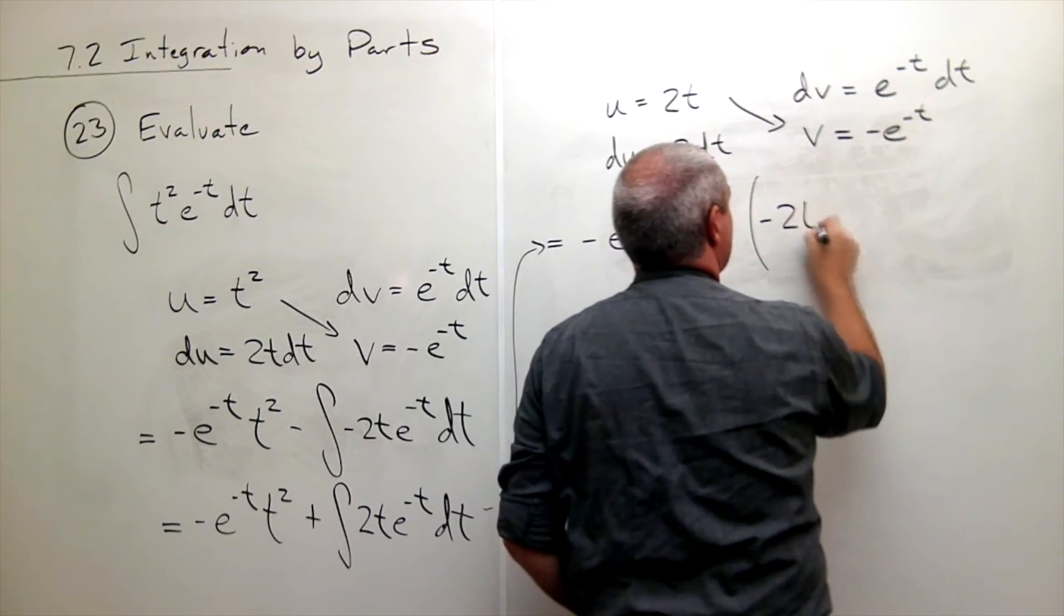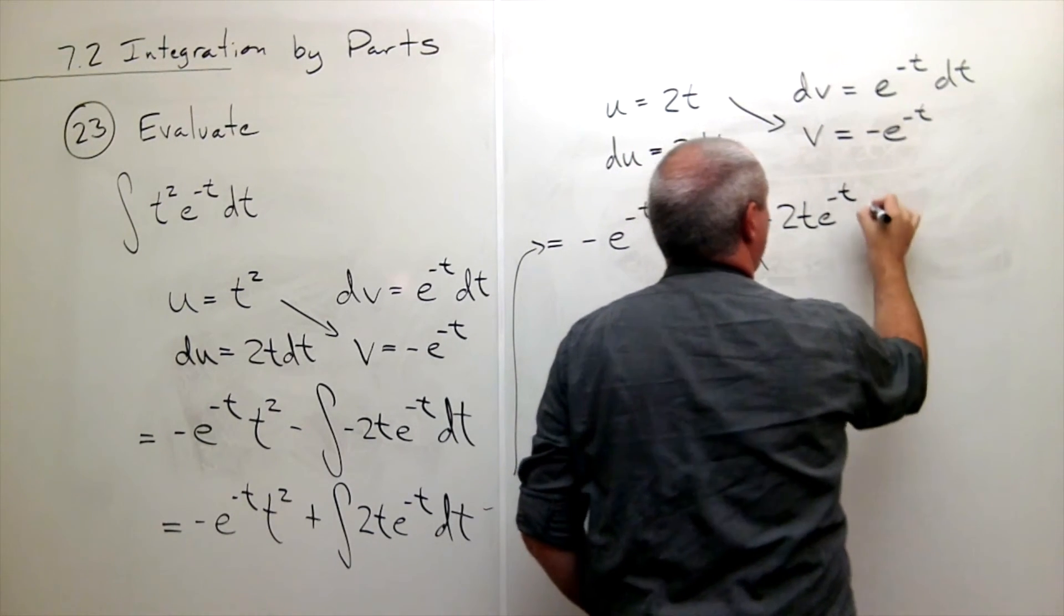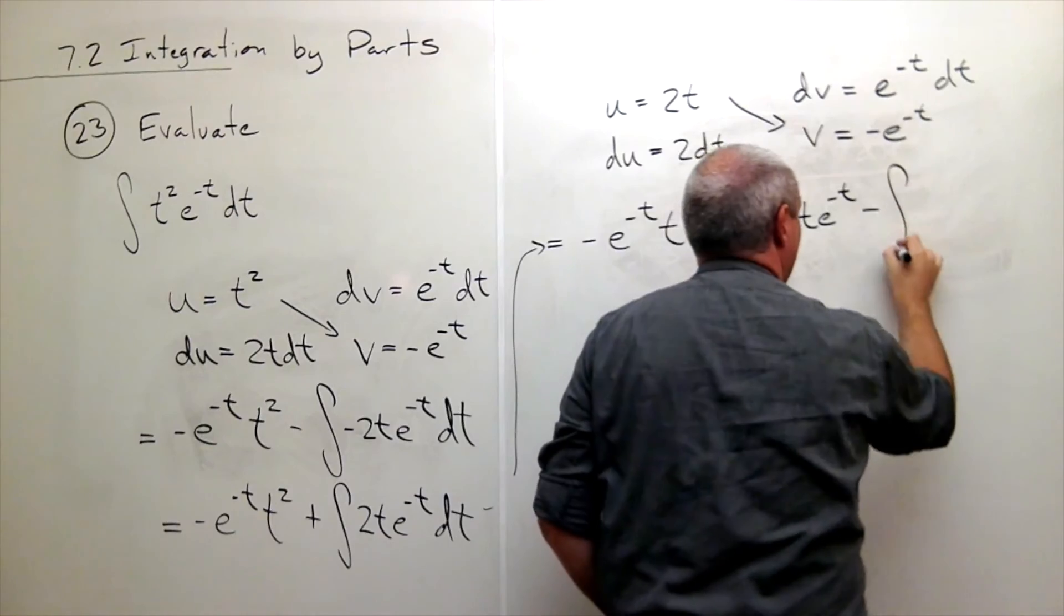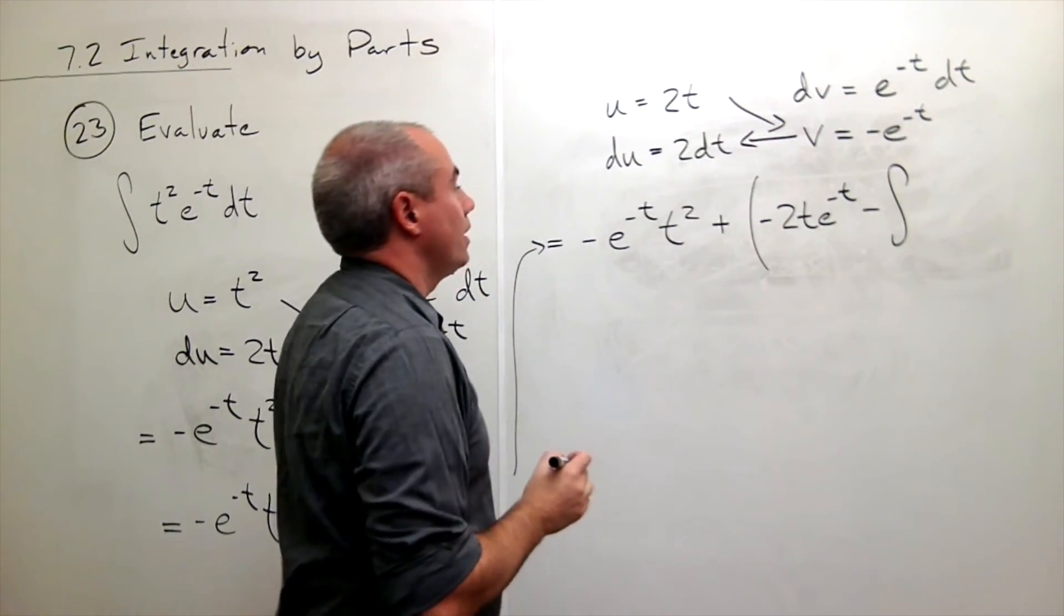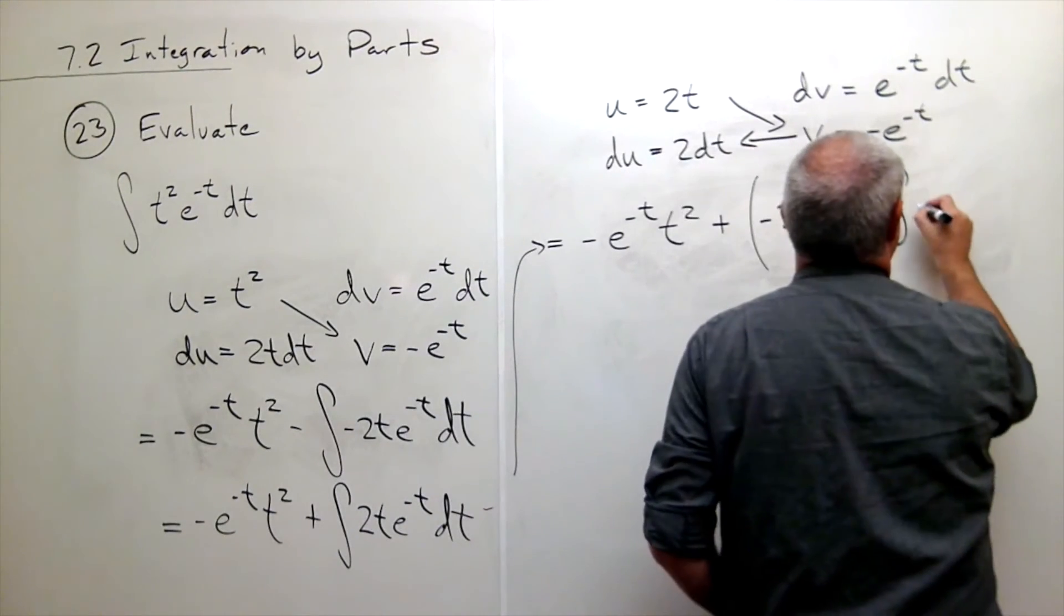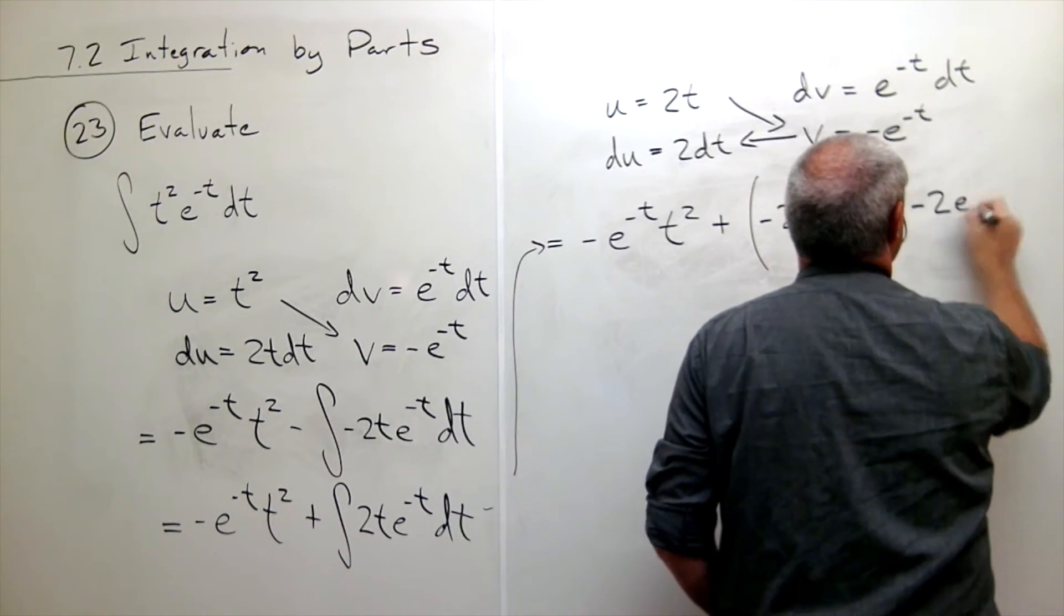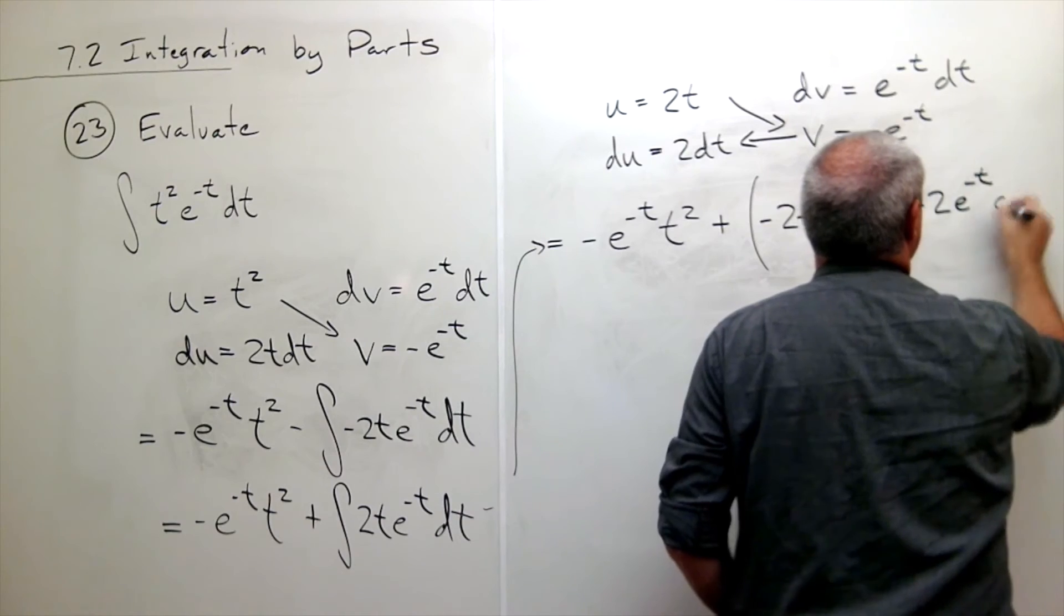So that's negative 2t e to the minus t. So negative 2t e to the minus t minus integral of v du. And that is, let's see, negative 2e to the negative t dt.